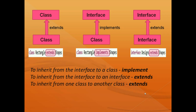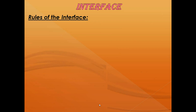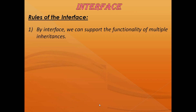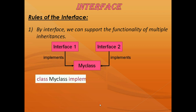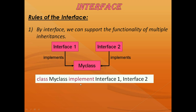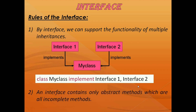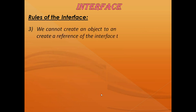This is how we can use interface in Java. Based on this discussion, let us cover some important points. By interface, we can support the functionality of multiple inheritance — meaning a class can implement multiple interfaces, like MyClass implementing Interface1 and Interface2. An interface contains only abstract methods which are incomplete. We cannot create an object of an interface, but we can create a reference of the interface type.